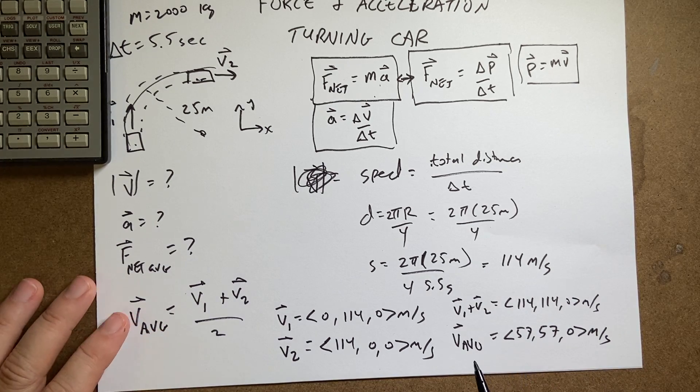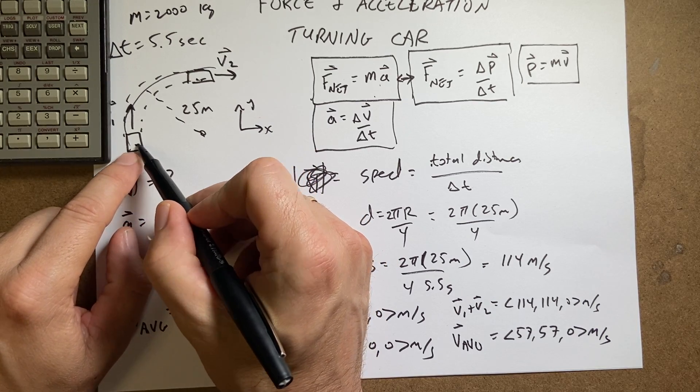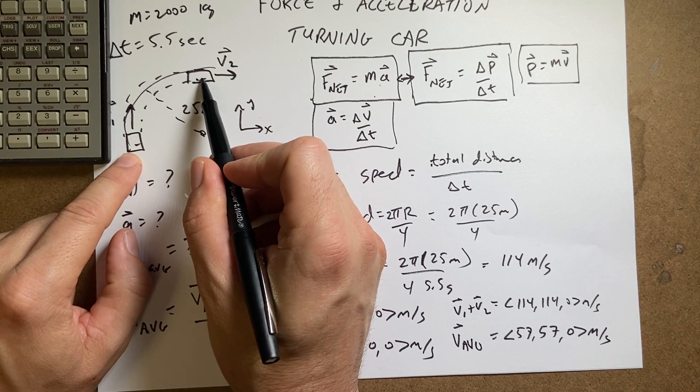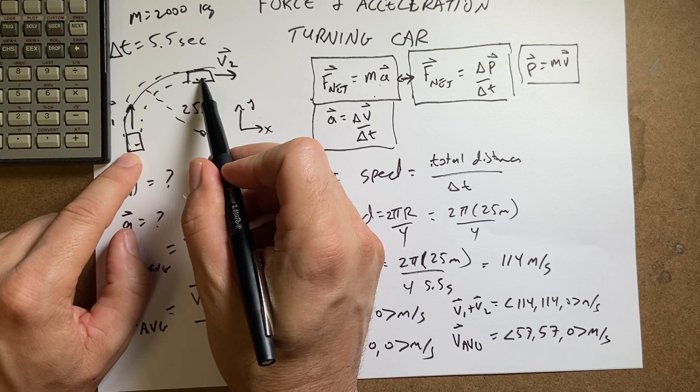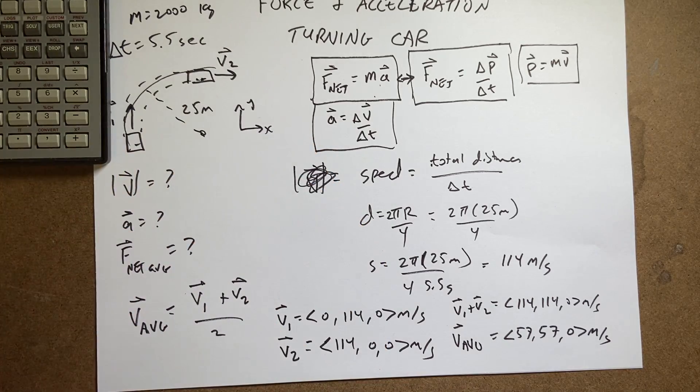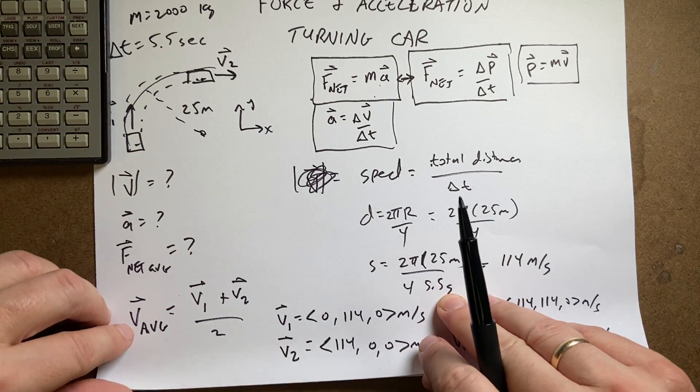Yeah, that's the average velocity. But that's if it was going from here to there in a straight line, right? But it's not. So it's not the same thing as the instantaneous speed. Okay, next thing. Let's get the acceleration.